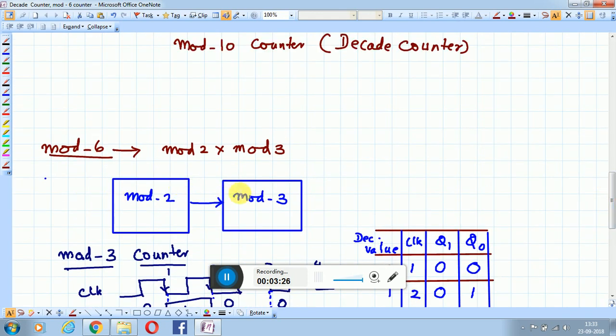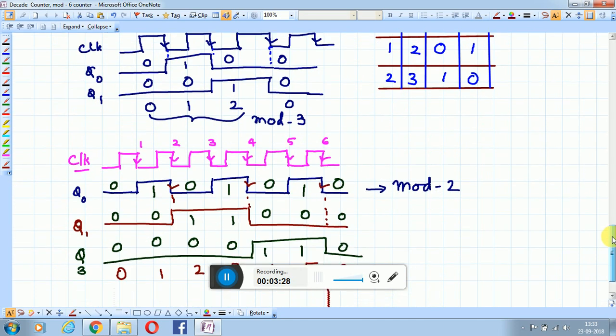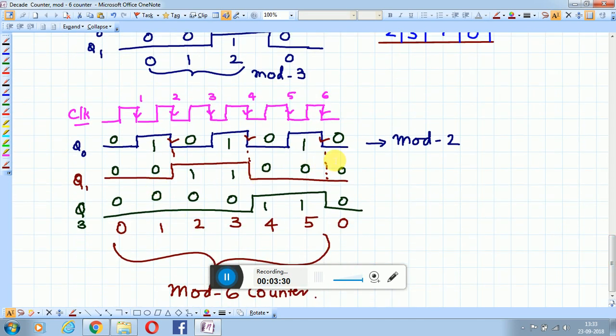Mod-2 times mod-3 becomes mod-6. Let us construct mod-2 which toggles with every clock pulse. Then we have the outputs Q2, Q1, and Q0. When you examine this count sequence...